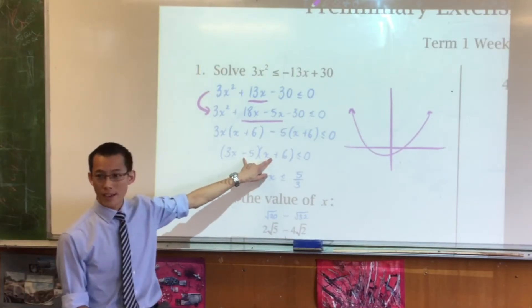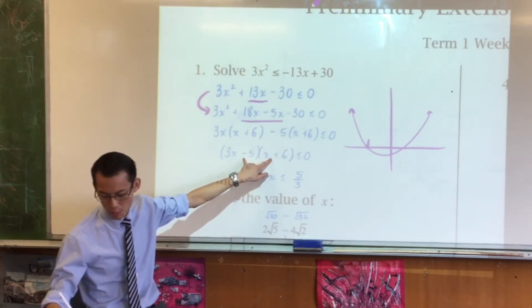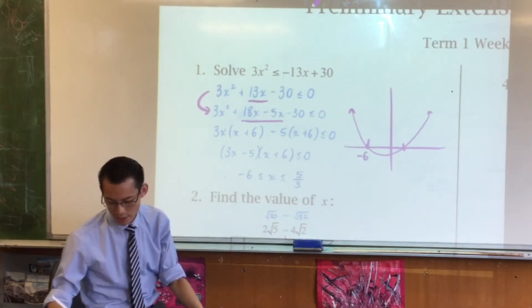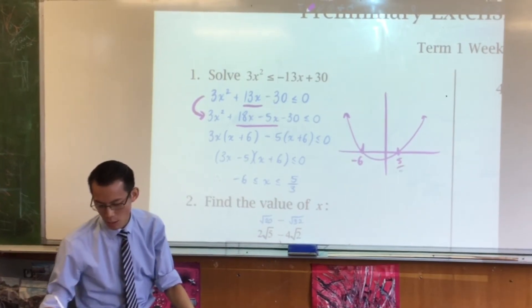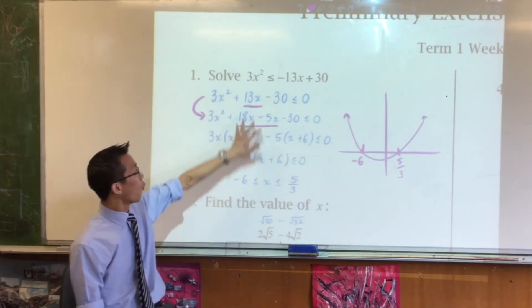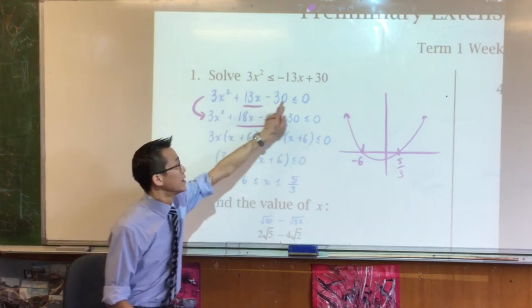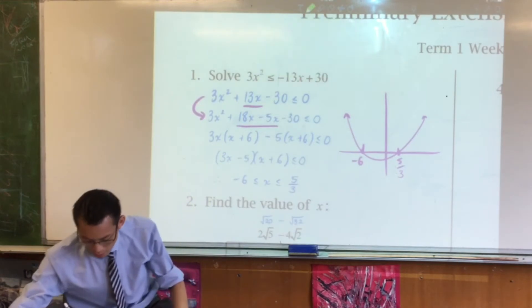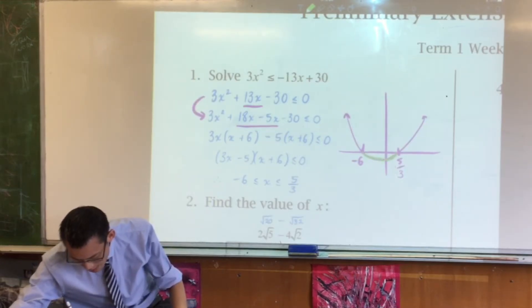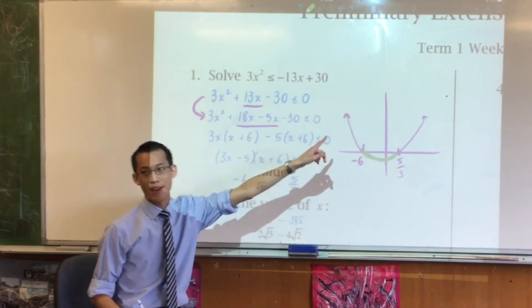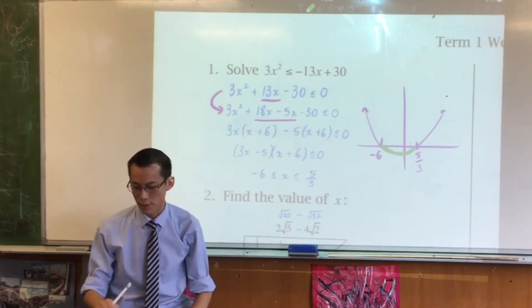What this tells me is where these two points of intersection are. One is going to be negative 6, this one's going to be 5 over 3. The question is asking when is this parabola less than or equal to 0, so the part that I'm interested in is going to be this part down here. Do you agree? That's why between negative 6 and 5 thirds, which is what gives you my inequality.